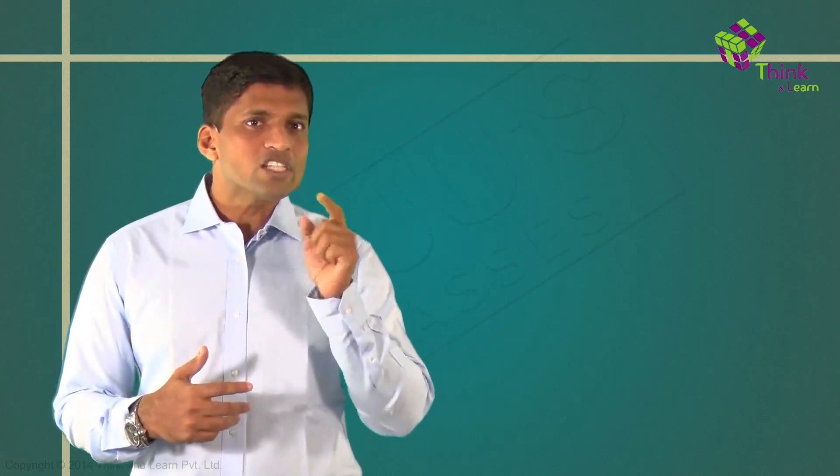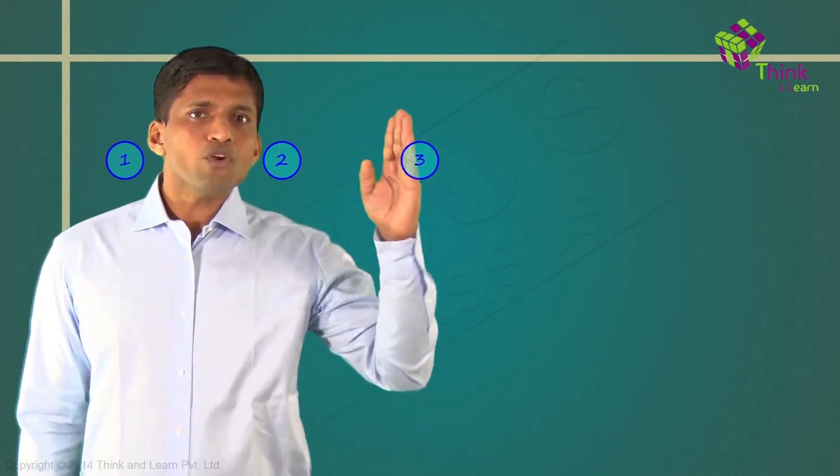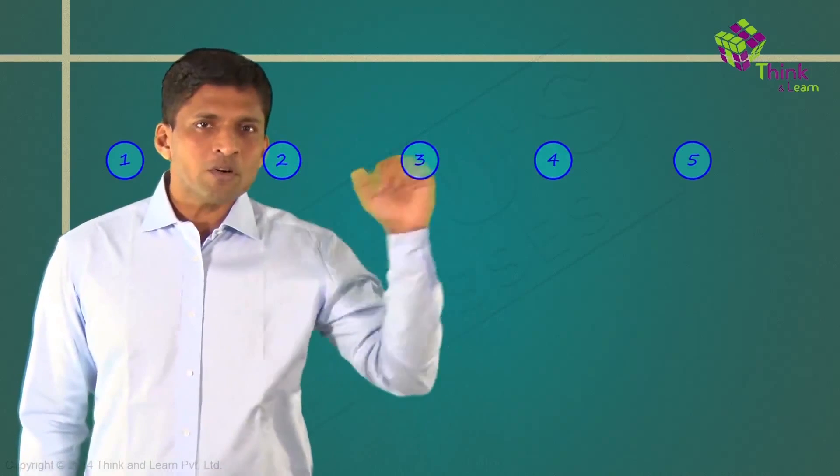Now let's understand geometry in a different but equally easy way. Geometry can also be taken as number patterns visualized in diagrams. If I start with the basic number pattern — 1, 2, 3, 4, 5 — these are natural numbers.